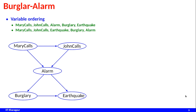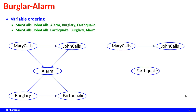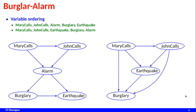Now let us look into another ordering: Mary calls, John calls, Earthquake, Burglary, Alarm. The first two nodes remain the same. For Earthquake, Mary calls and John calls will have some influence because both of them will eventually call and we do not know the reason — it could be because of an earthquake. Similarly if there is a Burglary, Earthquake has some influence because through the Alarm, Mary's call can have influence on Burglary, and John calls can have influence on Burglary as well.